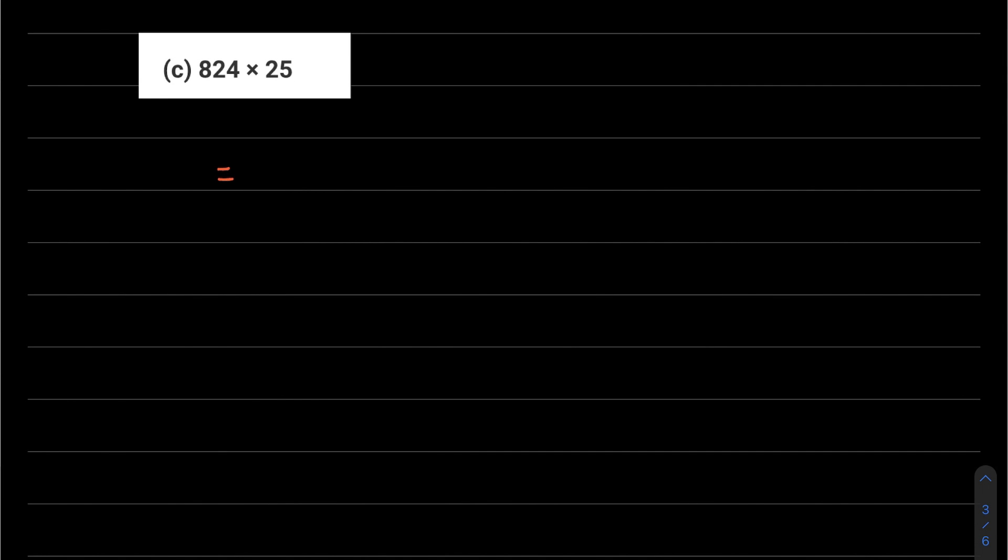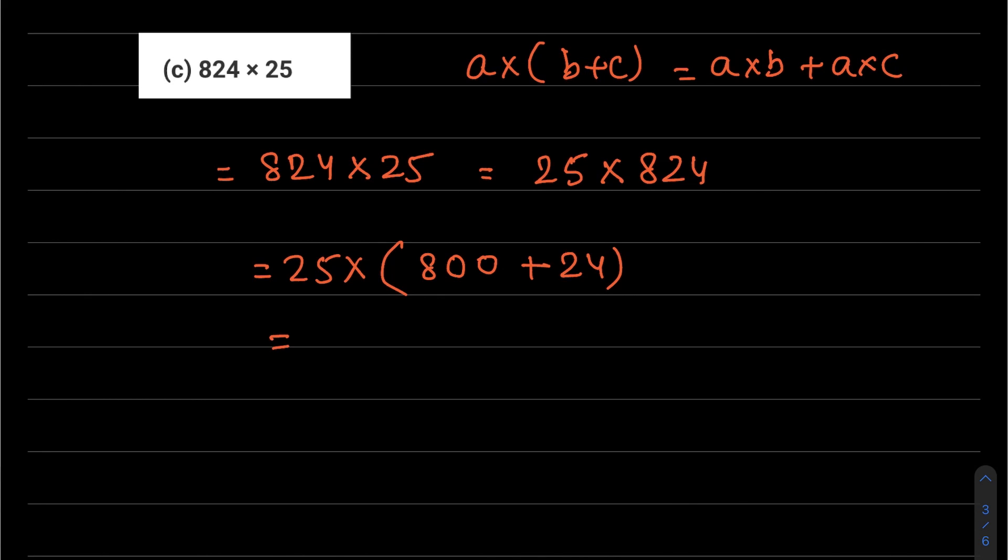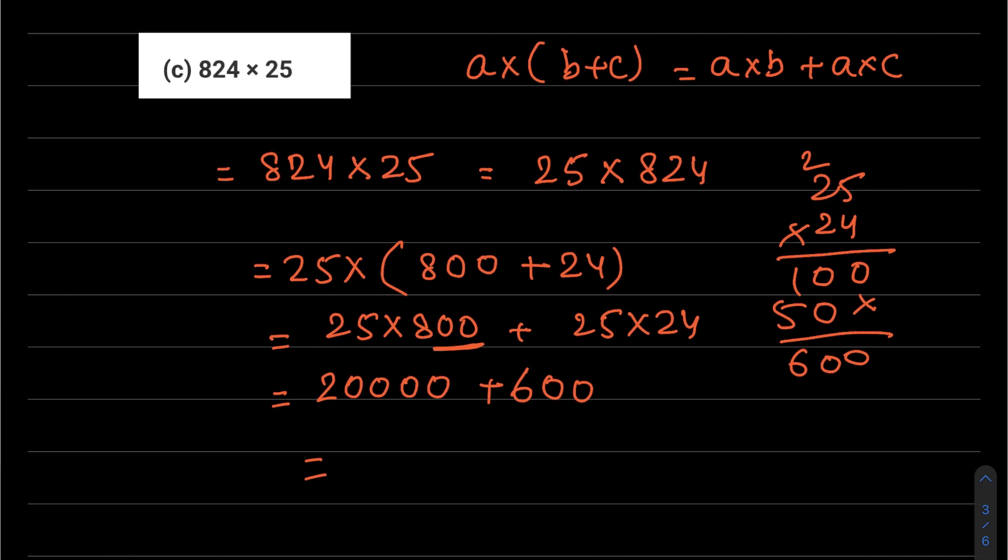Our answer is 54,42,437. Part c: 824 into 25. We can write this with the smaller number first, 25 into 824. 25 multiplied by 824, which we can write as 25 into 800 plus 24. Using distributive property, this becomes 25 into 800 plus 25 into 24. 25 multiplied by 8 is 200, and these two zeros. 25 into 24 you can calculate. This is coming 600. So 20,000 plus 600 is 20,600, that is the answer.